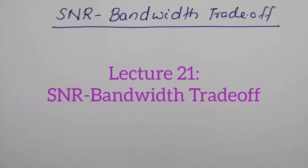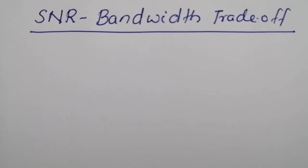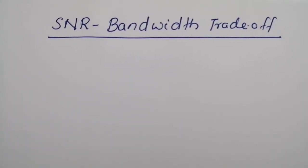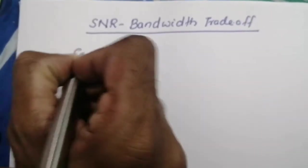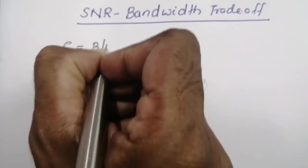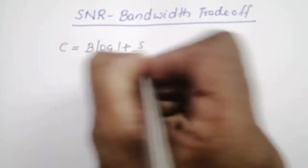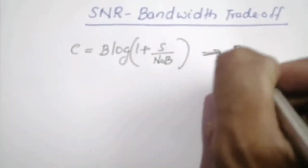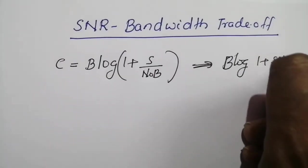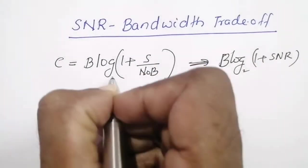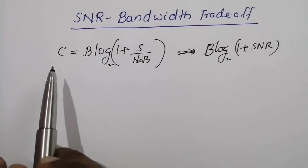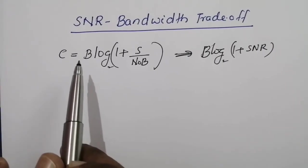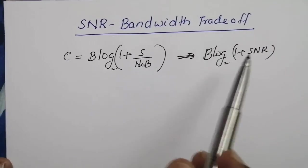Today we will discuss SNR bandwidth trade-off. We know that the capacity of a band-limited, power-limited, continuous channel is given by the information capacity theorem: C = B log(1 + S/N0B), or B log(1 + SNR). Thus we can see that the capacity depends upon the bandwidth of the channel as well as the signal-to-noise ratio.